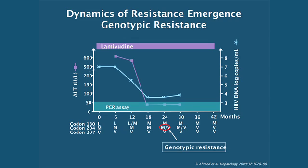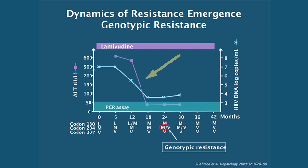The dynamics of the emergence of drug resistance in a patient treated with lamivudine are shown on the next three slides. Here, a patient was treated over 42 months. With the initiation of lamivudine therapy, the viral load goes down three or four logs, as shown by the blue line. Unfortunately, it does not reach below the limit of detectability in a PCR assay — the patient still has roughly just under four logs of HBV DNA. The serum ALT normalised promptly. Below the time axis, we can see the sequence readout from the viral polymerase for codons 180, 204, and 207.